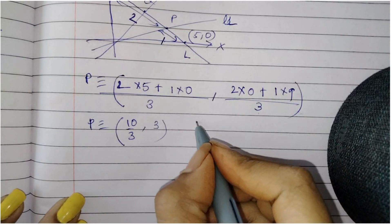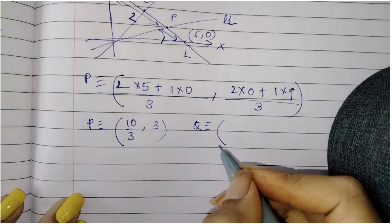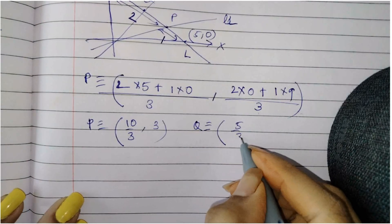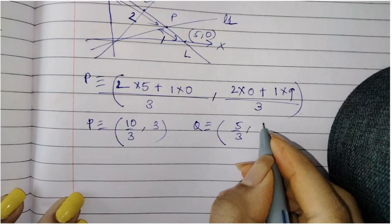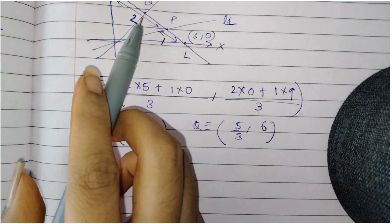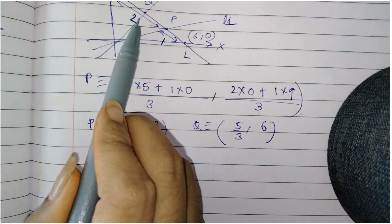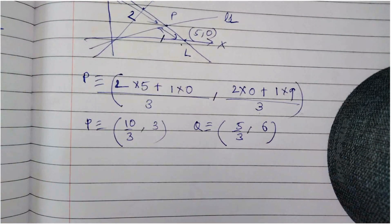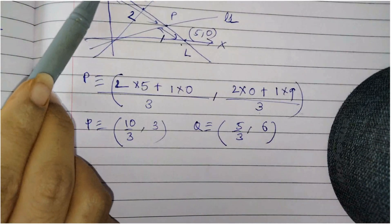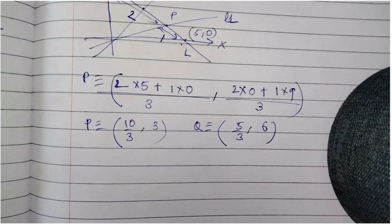Similarly, we can find the coordinates of Q. Using the ratio 1:2 from the other end, this gives Q as (5/3, 6). So Q is (5/3, 6).